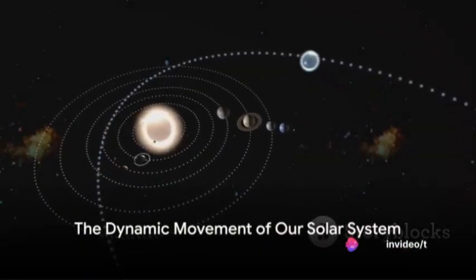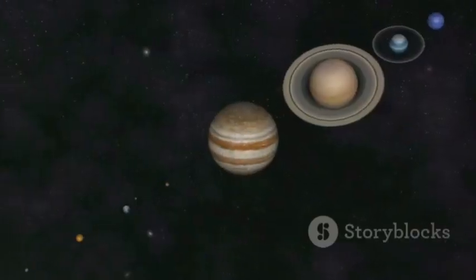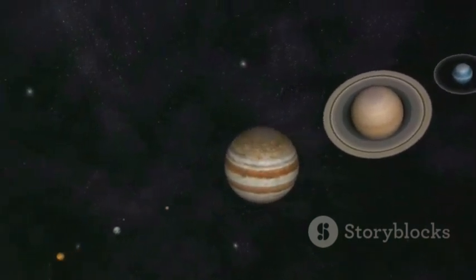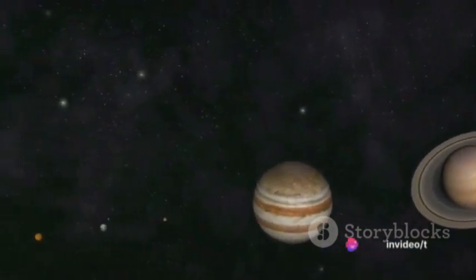Moreover, our solar system doesn't just move in a flat plane. It bobs up and down as it circles the galaxy. This movement is like the oscillation of a carousel horse, moving up and down while also moving forward.